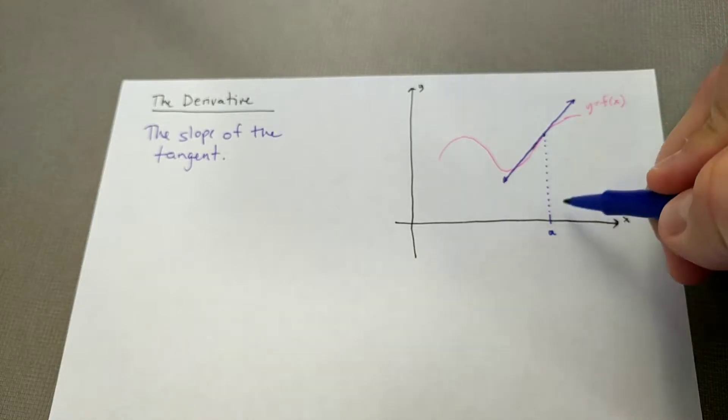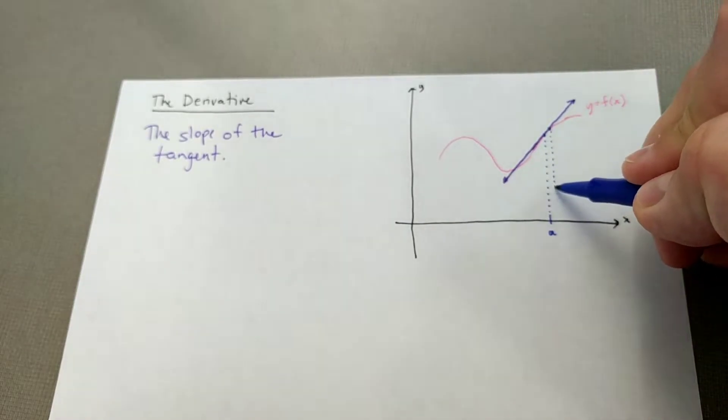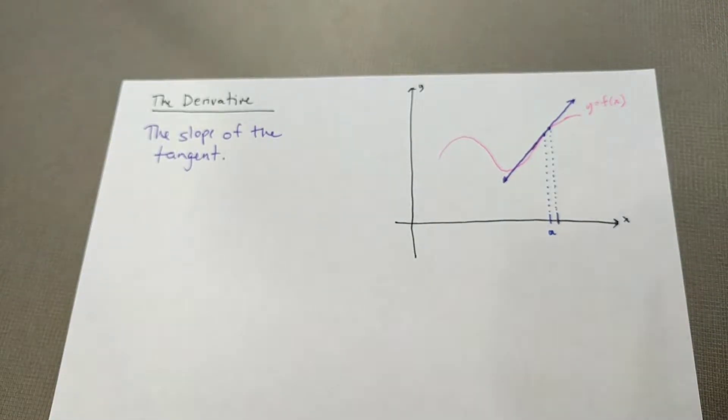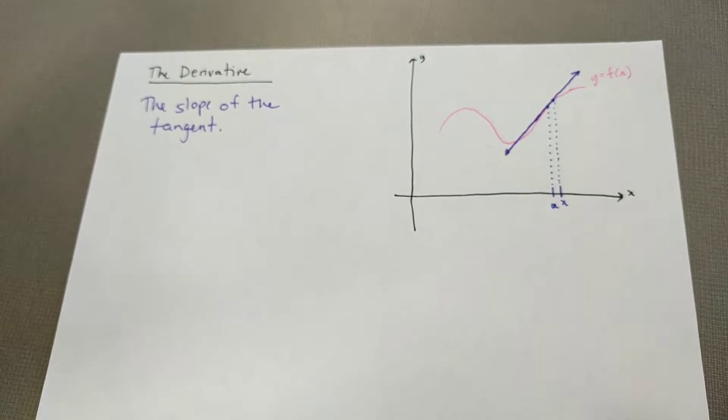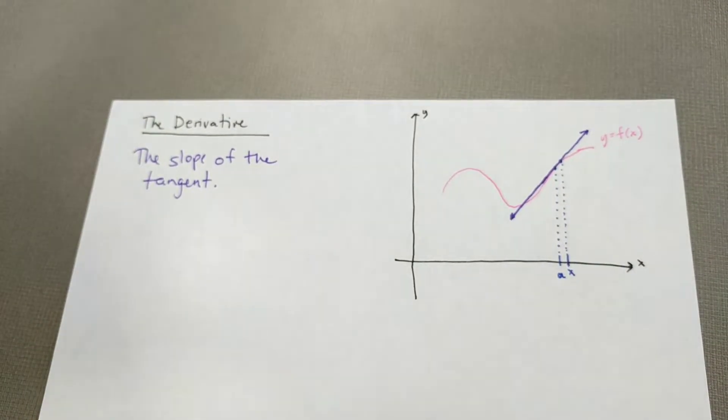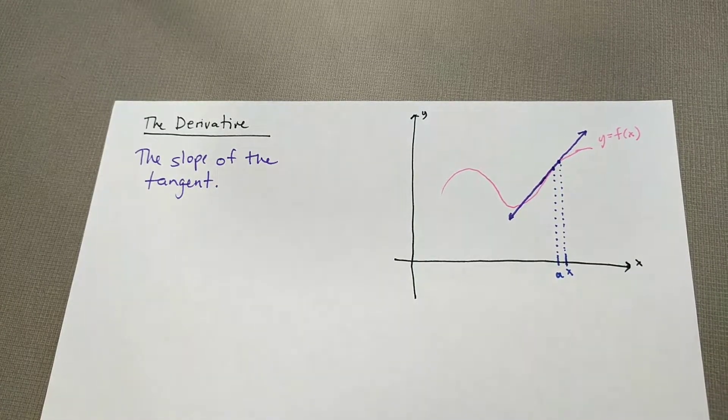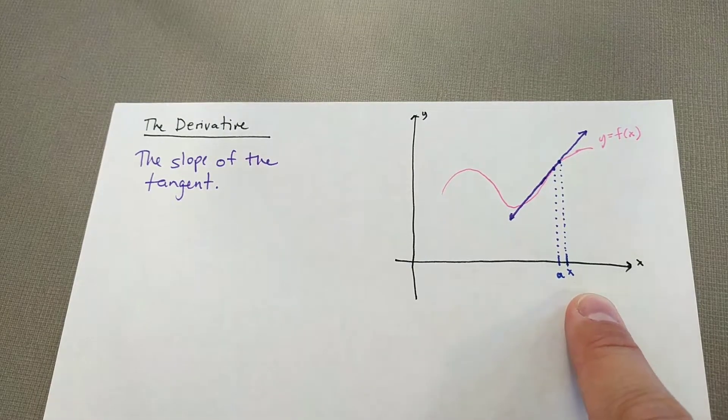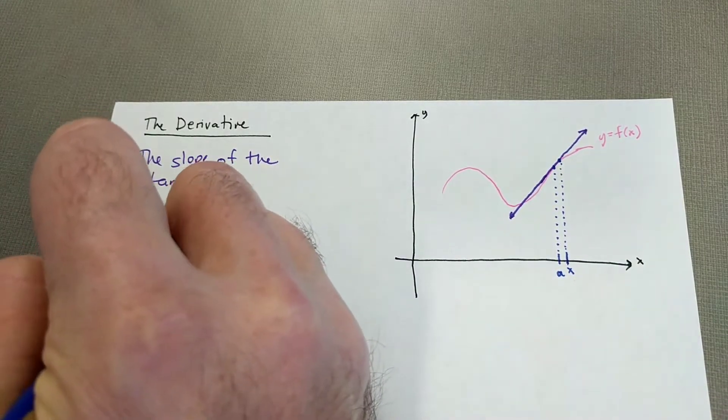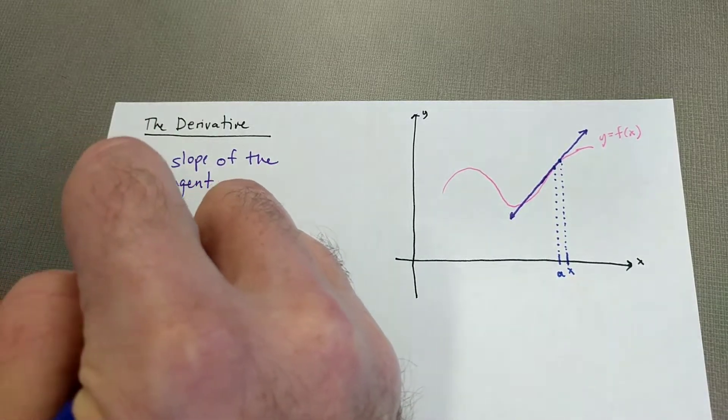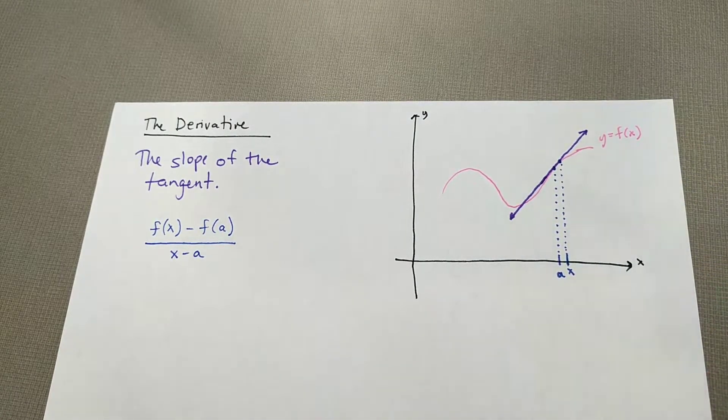So average rates of change are through two points. What we're going to do is sort of fake this out. So I'm going to choose a point that's pretty close to A. Follow that on down. There's some different ways you can sort of label this point. I'm going to call it X. So for the average rate of change between A and X, we would do F of X minus F of A all over X minus A. So it's just your change in outputs over your change in inputs.